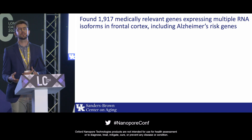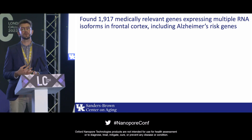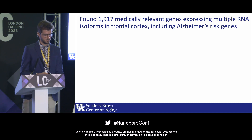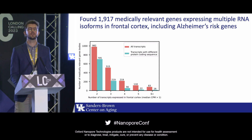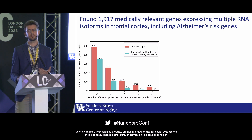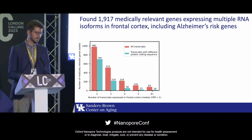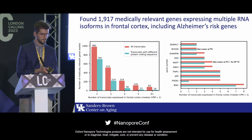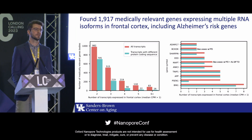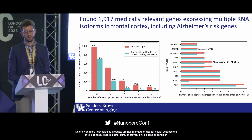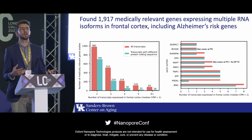Switching gears from new to annotated transcripts, we looked at the expression of medically relevant genes in frontal cortex and how many express more than one RNA isoform. We found that 982 genes express two different isoforms in frontal cortex, with 705 expressing two isoforms encoding different proteins that could have completely different functions. On the right, 83 genes have six or more RNA isoforms and 16 genes have six or more RNA isoforms encoding different proteins. Focusing on Alzheimer's risk genes: APP, the amyloid beta precursor protein gene, expresses five isoforms encoding five different proteins — important for testing differential expression between Alzheimer's disease and controls.